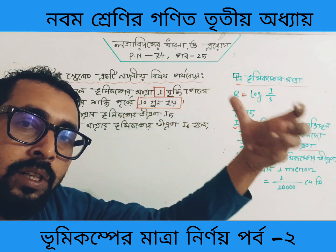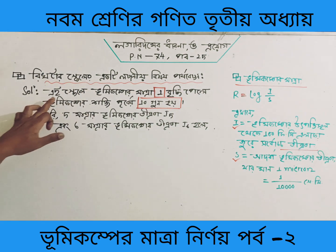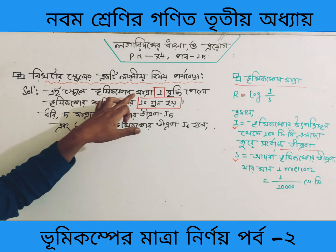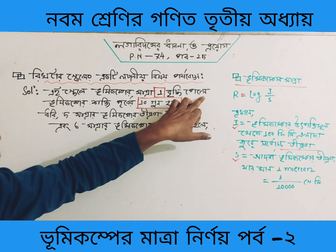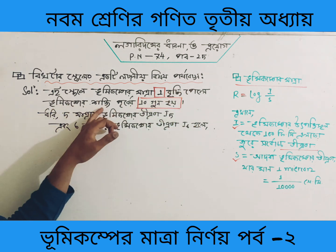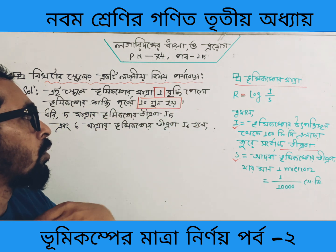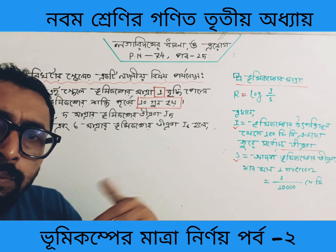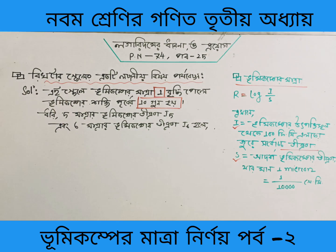If it's 1 µm, it's 10 times. So the Richter scale radius is 1,000 percent, 1 µm, and if it's 1 µm, it's at least 10 times.